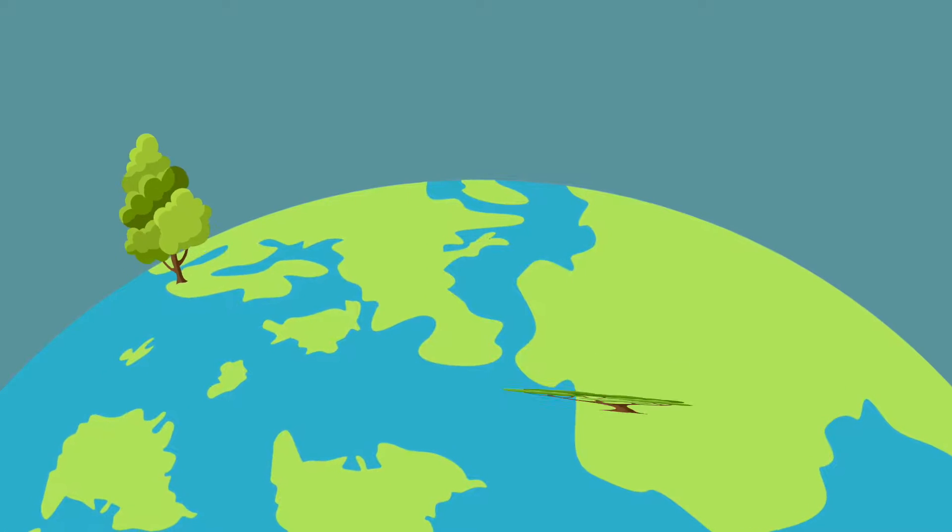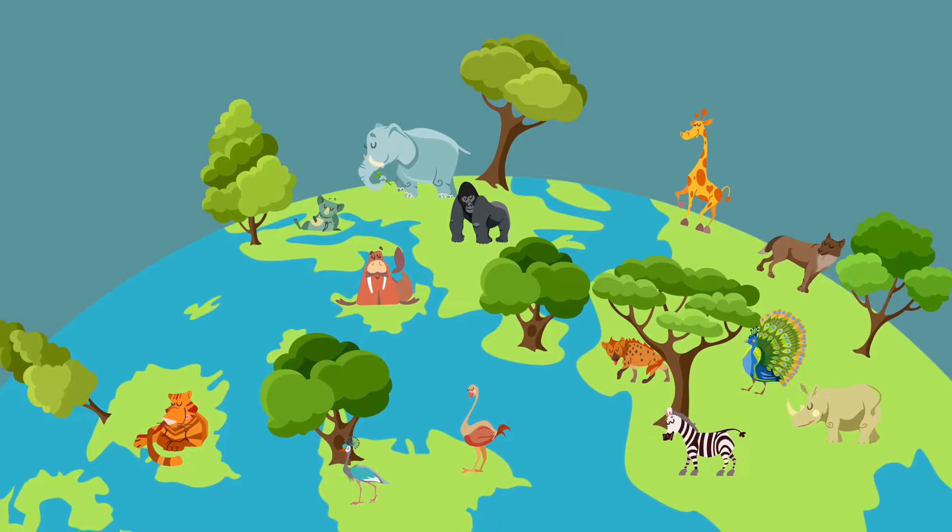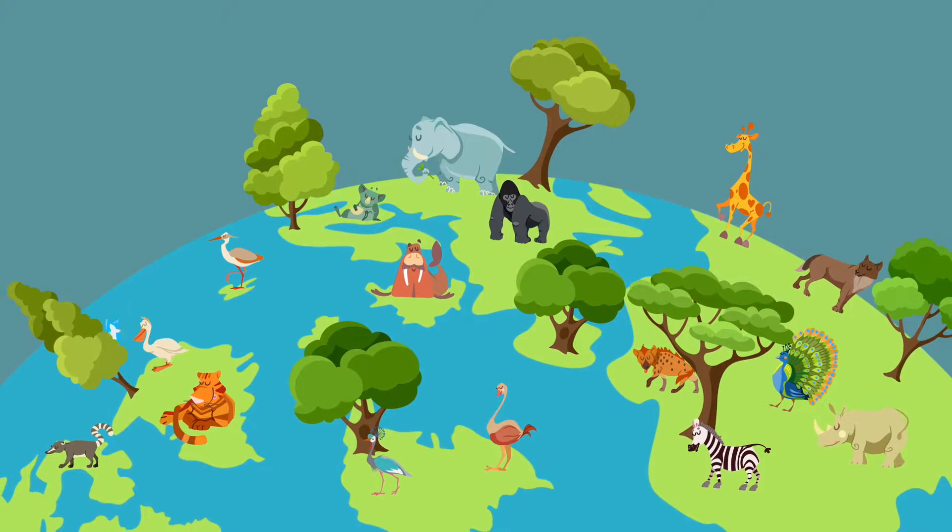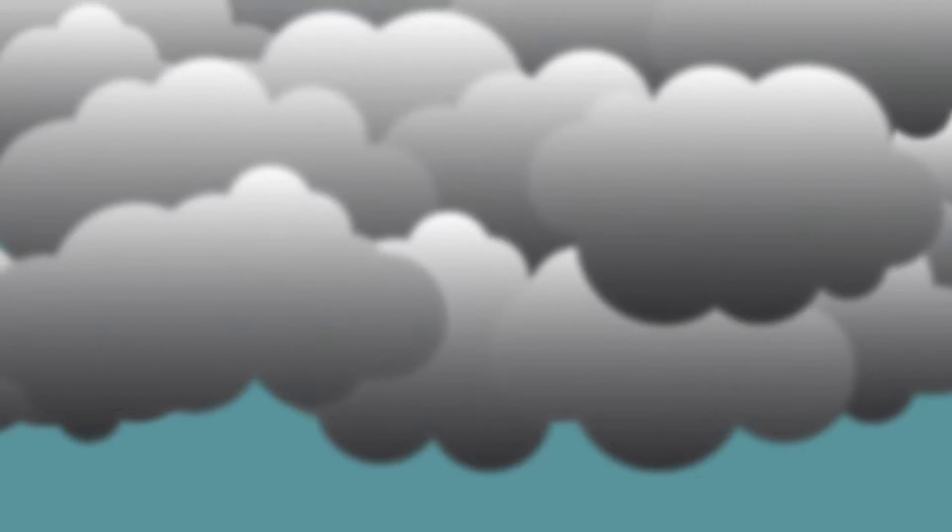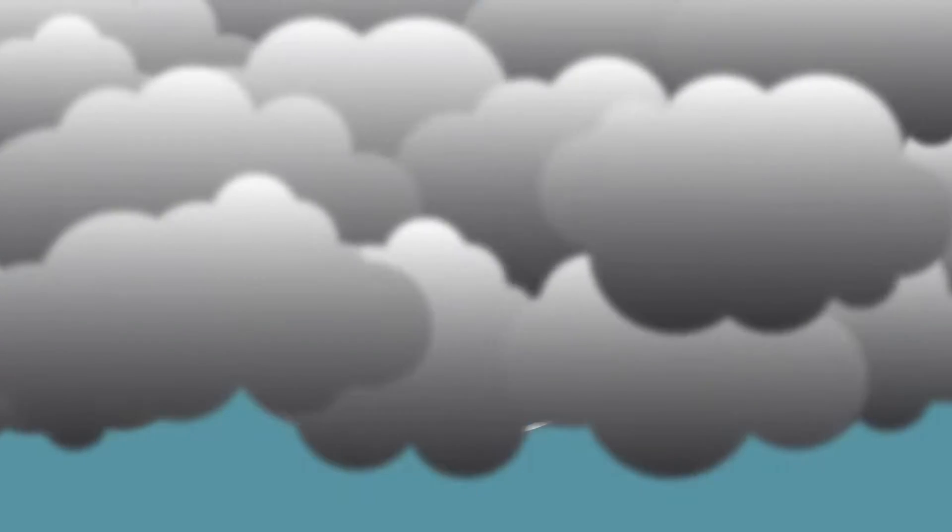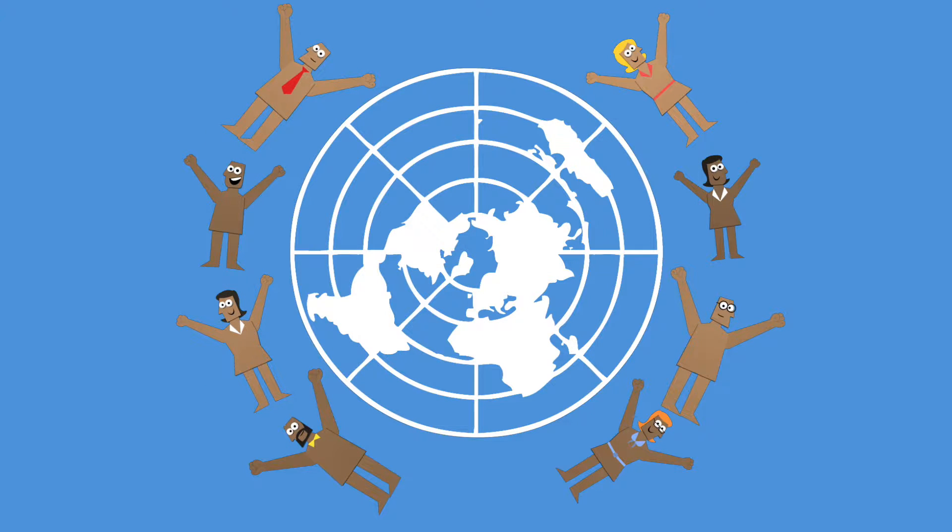We all deserve to live in a world where flora and fauna of every shape and hue are given the conditions to survive and thrive. It's possible to reverse the effects of climate change which threaten all life on earth, and we all have a role to play in helping the UN achieve this goal by 2030.